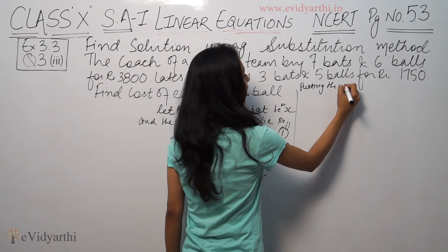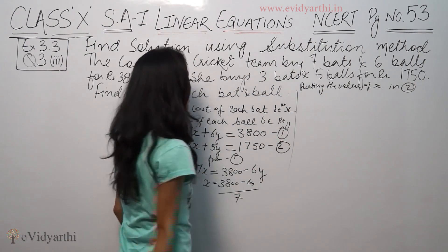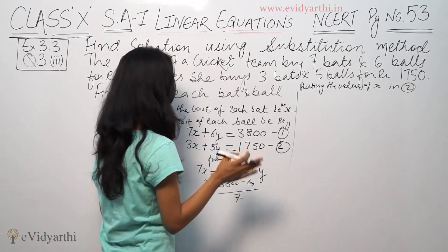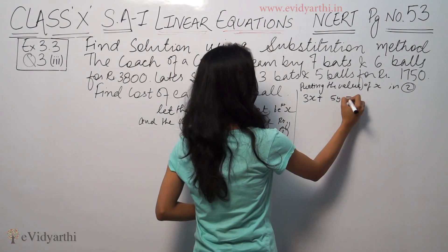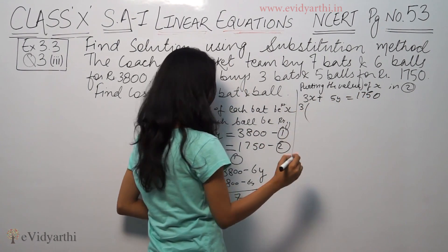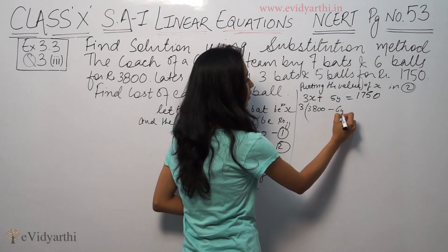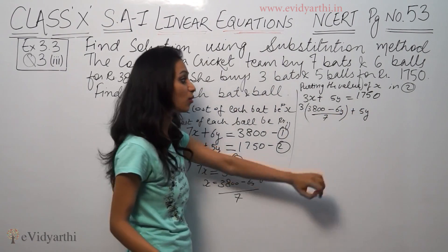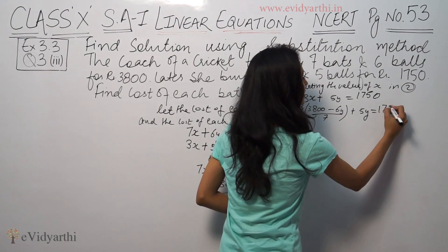Now putting the value of x in the second equation. So 3x plus 5y equals 1750. Substituting x equals (3800 minus 6y) upon 7, we get 3 times (3800 minus 6y) divided by 7 plus 5y equals 1750.